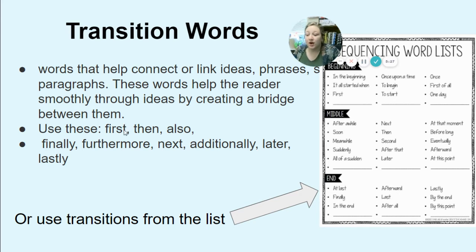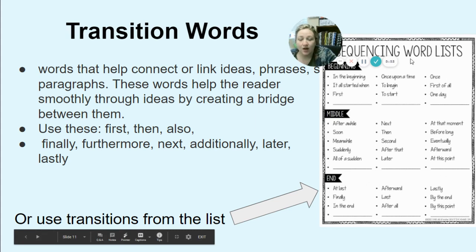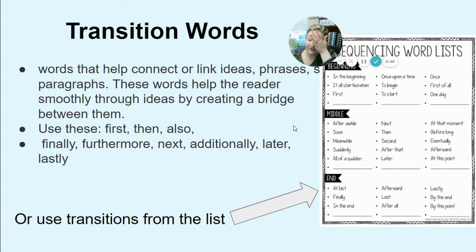Make sure you use transition words — you will be graded on them. These are words that link or connect ideas, phrases, sentences, and paragraphs. They help the reader move smoothly through ideas by creating a bridge between them. Use words like: first, then, also, finally, furthermore, next, additionally, later, lastly. Or use others from a list, or Google 'transition words' if you can't think of any. Make sure you add at least two transition words for every paragraph. Please put them in. Pause the video and go do that.